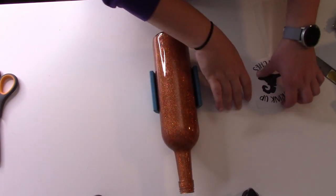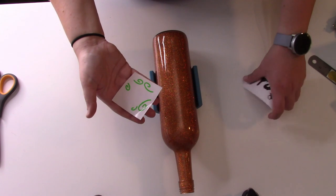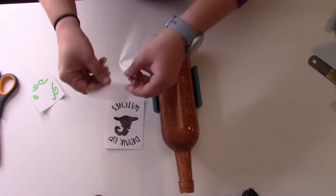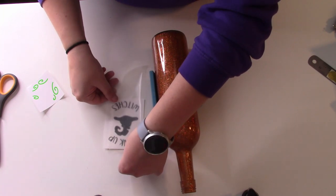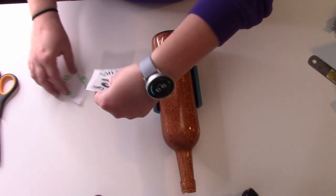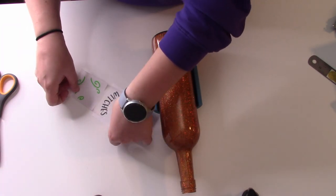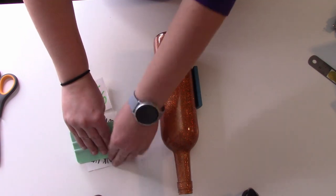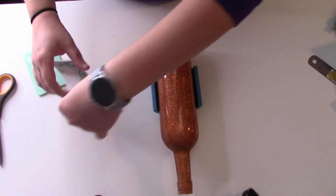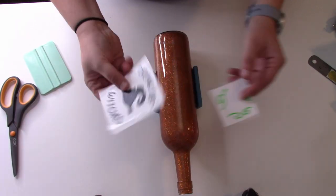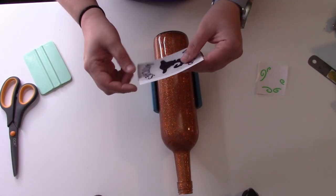We're ready to apply our decal, which I have weeded here. We have our two pieces. So what we're going to do is take transfer tape and place it over both items. Now you want to take a squeegee and go ahead and just run that over the top of your decals. I'm going to go ahead and cut mine apart.